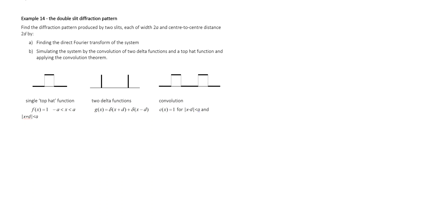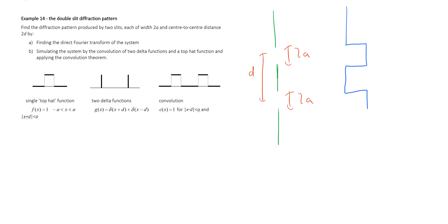What we've got in this problem is two slits. We assume that the slits have nonzero width; the slits are a distance d apart and each of the slits has a width of 2a. If we were to plot the transmission function it would look something like the blue line here — the light gets through the two slits where the transmission is one, and in all the other regions the transmission is zero.